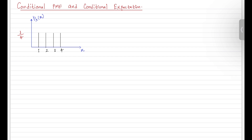Now let me give you one evidence or condition. Let's say event A has occurred. You may ask what this event A is — I haven't defined it yet. Event A is such that random variable X takes a value greater than or equal to 2.